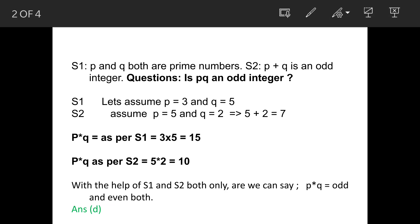As per statement 1, let us assume that p is 3 and q is 5. And for statement 2, the sum should be an odd integer, so let us assume the values as 5 and 2. Here we are assuming one odd number and one even number.